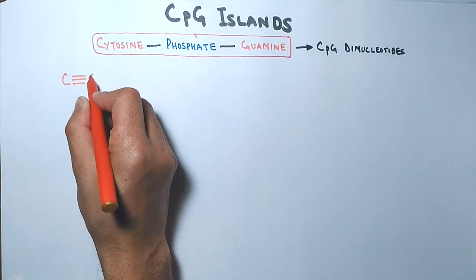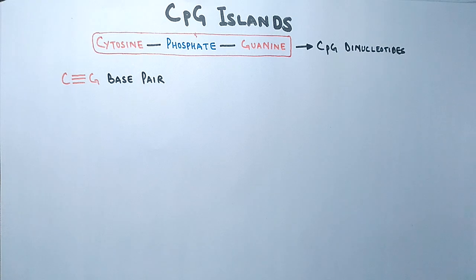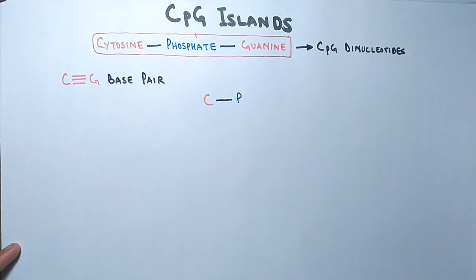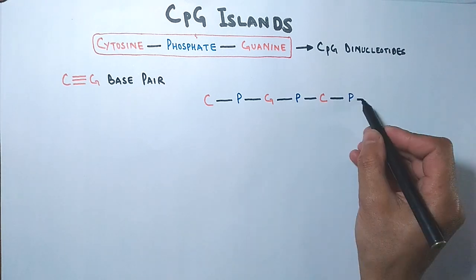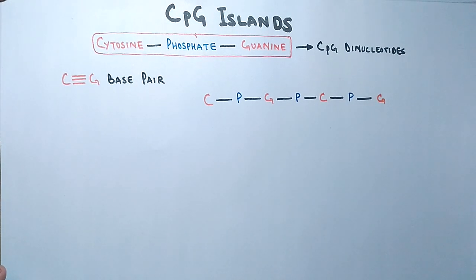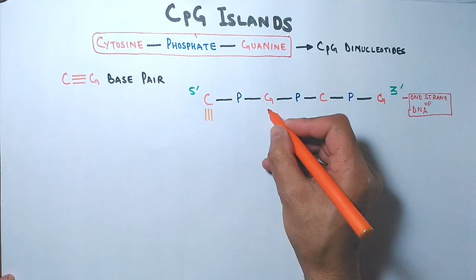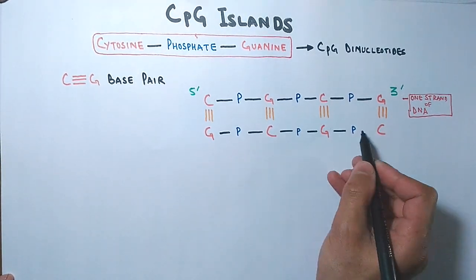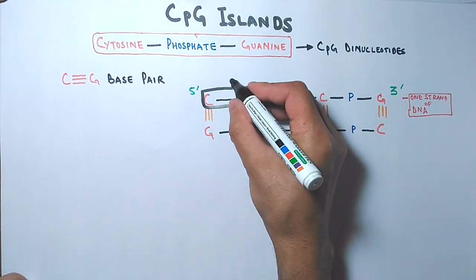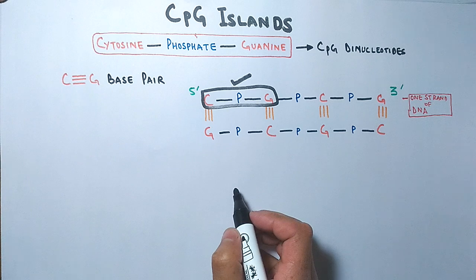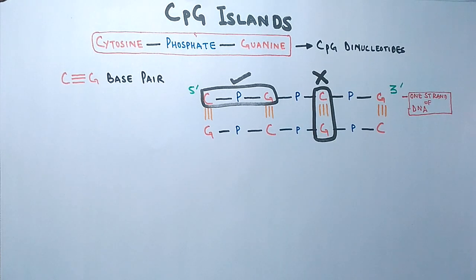Remember there is a CG base pair which should not be confused with CpG islands, because CpG dinucleotides are present on a single strand. If you look at the DNA strand we have cytosine, phosphate, guanine, phosphate, cytosine, phosphate, guanine connected in series running 5 prime to 3 prime end as shown in the figure. Its complementary bases will be arranged in this manner, and it is these CpG dinucleotides we are concerned with, not the CG base pairs.